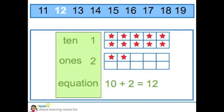As we count higher, watch how the second 10 frame fills up and we continue to add more stars. This is number 12. Next is 13, 14, 15, 16, 17, 18, and the last number in the teens is 19.